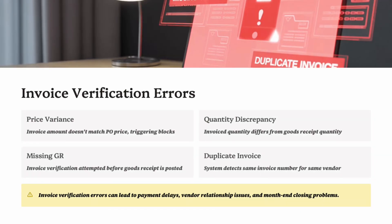Part 4: Invoice Verification MIRO Errors. The invoice verification step — MIRO — is where many errors surface because it's the checkpoint that ties PO, GR, and the vendor invoice together. If something doesn't match, SAP will block the invoice or throw an error. Common issues include Price Differences, where the invoice price doesn't match the PO price — this often happens if the vendor changes prices without updating the PO. Quantity Differences occur when the invoice reflects a different quantity than what was posted in the goods receipt.